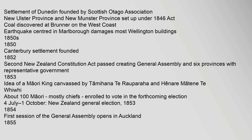1848: Settlement of Dunedin founded by the Scottish Otago Association. New Ulster Province and New Munster Province set up under the 1846 Act. Coal discovered at Brunner on the west coast. Earthquake centred in Marlborough damages most Wellington buildings. 1850s: 1850: Canterbury settlement founded. 1852: Second New Zealand Constitution Act passed, creating the General Assembly and six provinces with representative government.